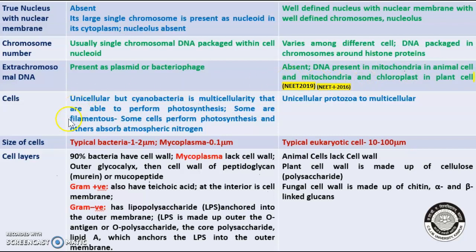We will be discussing ribosomes shortly. The cells may be unicellular in prokaryotes, but cyanobacteria also shows multicellularity. In eukaryotes, we have a range from unicellular protozoa to multicellular human beings. Size of the cell is generally smaller in bacteria; in prokaryotes, mycoplasma is even smaller. Eukaryotic cells can be very large.